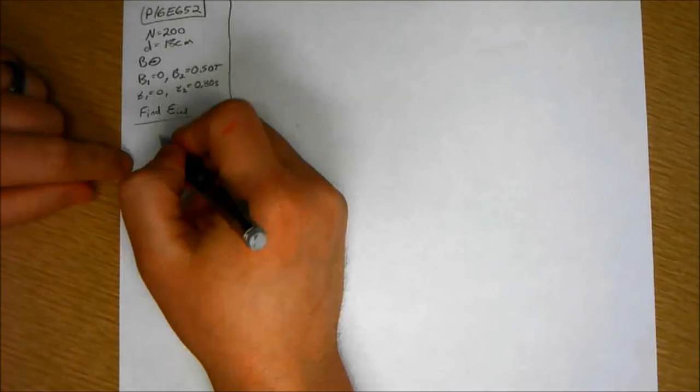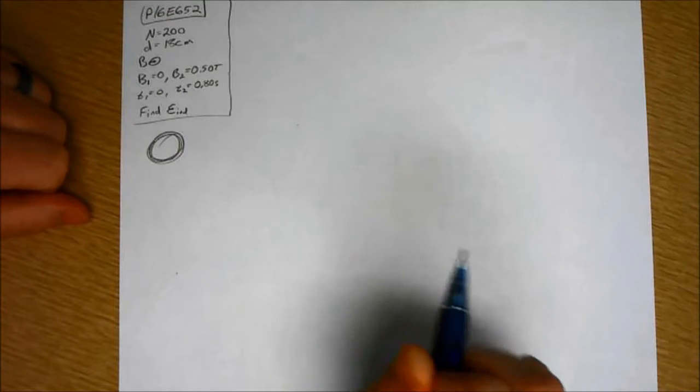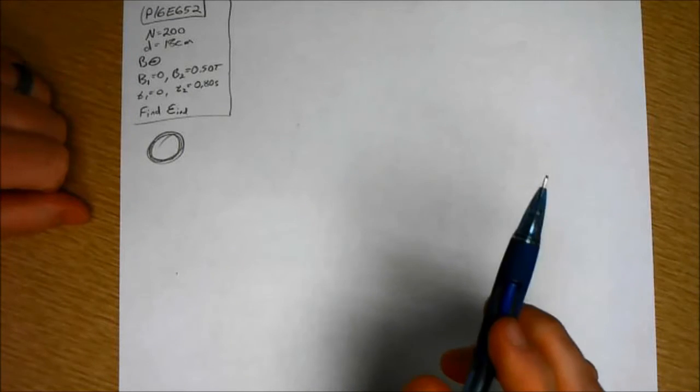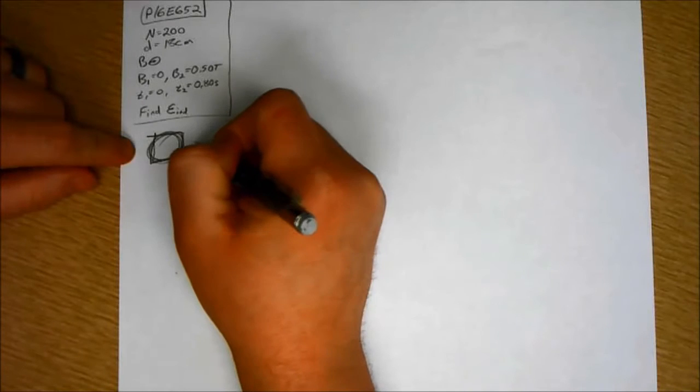This is a Faraday's Law problem where you have a coil consisting of 200 turns. So you've got some 200 turn coil. Each turn is a, oh I'm sorry, it's a square of side length d.